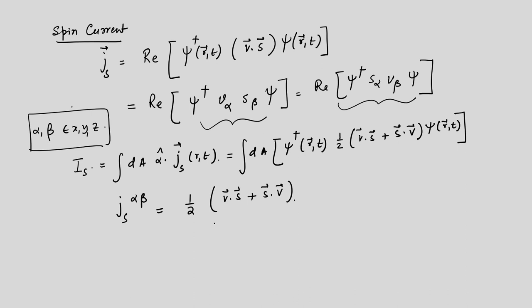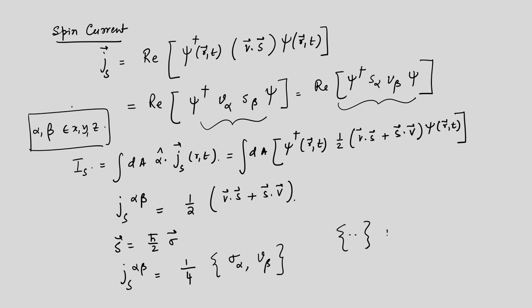Using S equals (h-bar/2) sigma, where sigma denotes the Pauli matrices, we can write J^{alpha beta}_s equals one-quarter times the anti-commutator {sigma_alpha, v_beta} (taking h-bar equal to 1). Recall that the anti-commutator of A and B is AB plus BA, while the commutator has a minus sign.